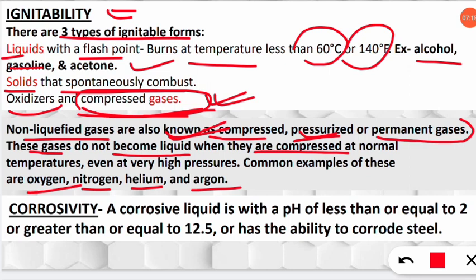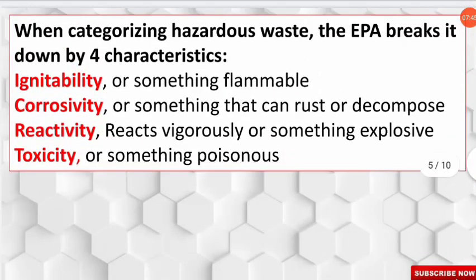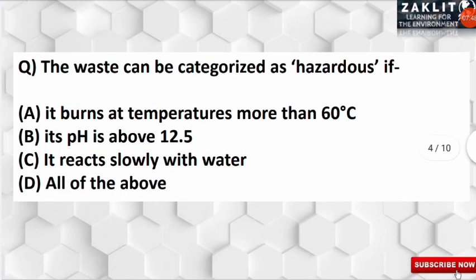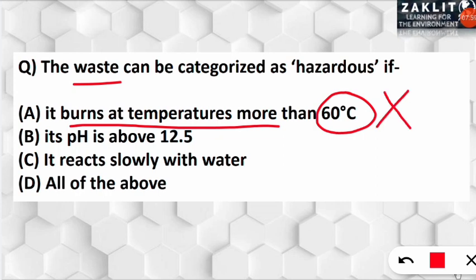For corrosivity: if any liquid has a pH less than 2 or more than 12.5, it is called corrosive — pH below 2 means very acidic, and above 12.5 means very alkaline. Now looking at the question options: option A says the substance burns at a temperature more than 60°C — that is not hazardous, because it must burn at less than 60°C to be ignitable hazardous.